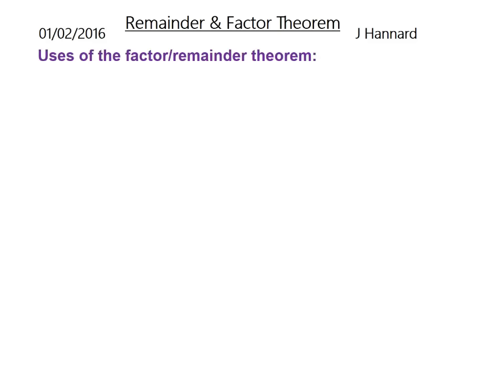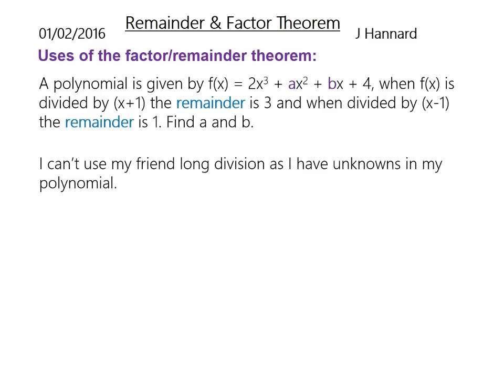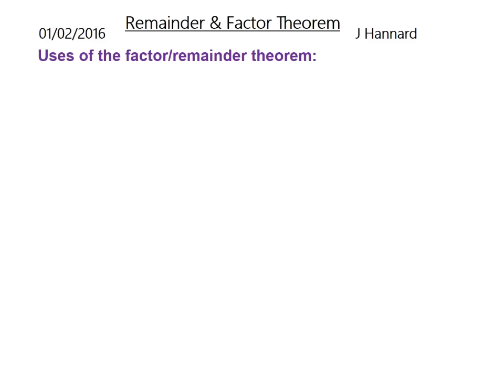So the uses of the factor and remainder theorem. A polynomial is given by f(x) = 2x³ + ax² + bx + 4. When f(x) is divided by x + 1, the remainder is 3. And when it's divided by x - 1, the remainder is 1. So find a and b. So yeah, I can't use my good old friend the long division as I've got unknowns in my polynomial. That's the main and only use of factor and remainder theorem, is to find unknown letters. Obviously mathematicians are lazy and we want to do it in the fastest way possible. And that's another reason. But yeah, this is the main reason, to find generics in the cubic.